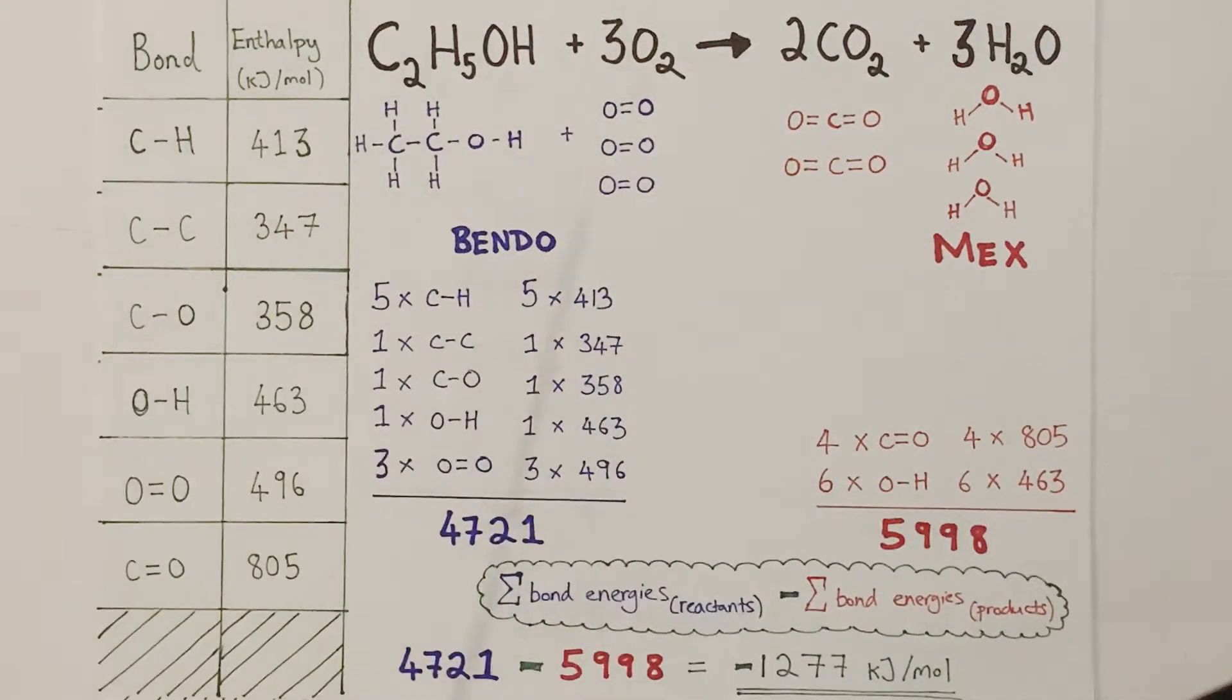So first of all, what we do, we list all the bonds we can see of different types. So for example, if I count around this ethanol molecule, I can see one, two, three, four, five CH bonds. So I just record that, and I make a list of all the different bonds I can see. I've got five CH bonds, one CC bond, one CO bond, one OH bond, and then three oxygen-oxygen double bonds. And that accounts for all of my reactant bonds.